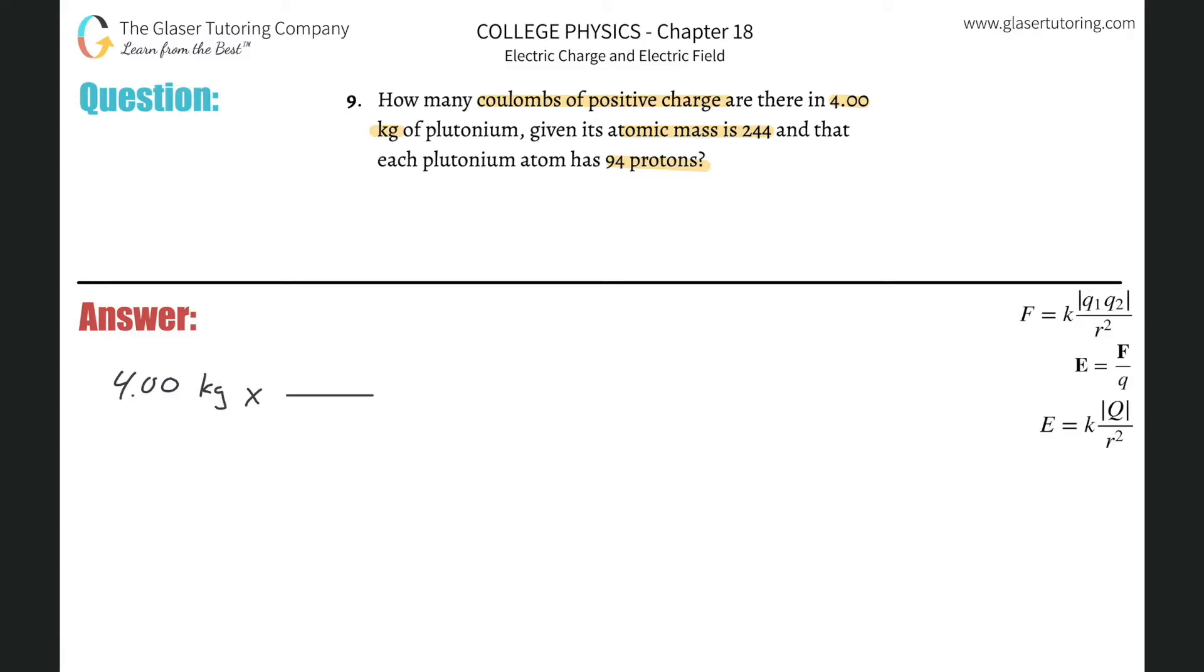So this is going to be kilograms on the bottom. We have to convert this into grams first, because the atomic mass, although they don't tell us the units, there are a few units for mass when we deal with atomic mass. It kind of depends, but I'm using the grams per mole value. So there's a thousand grams in every one kilogram,